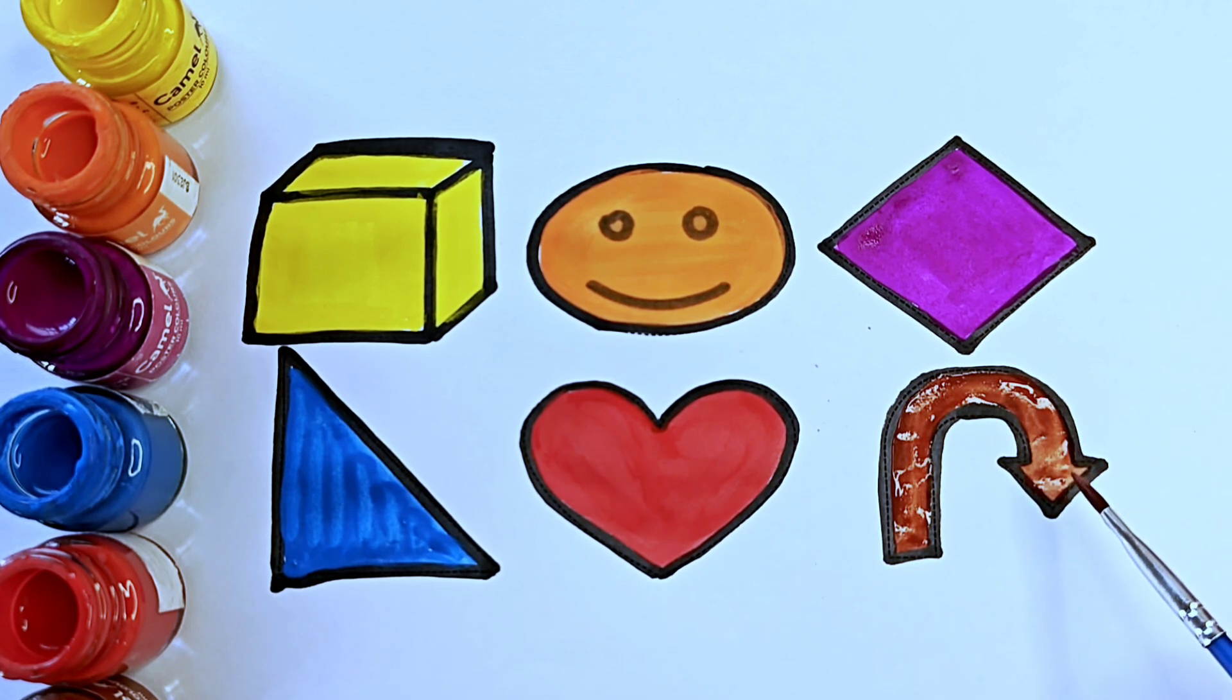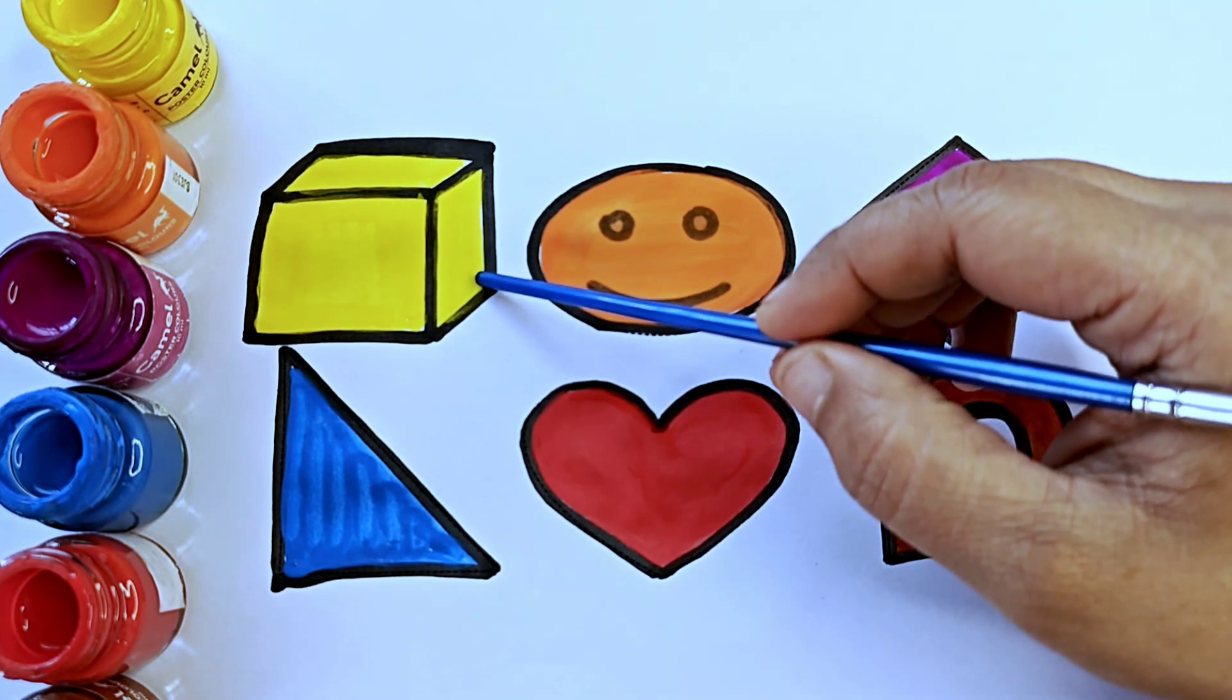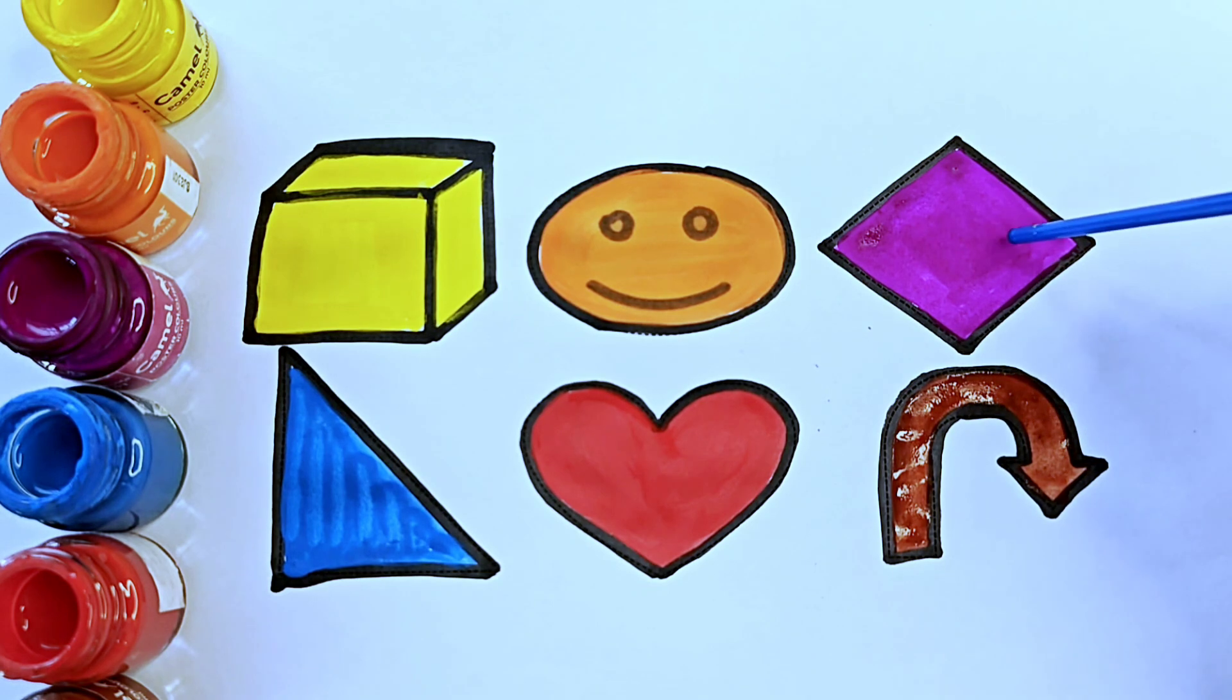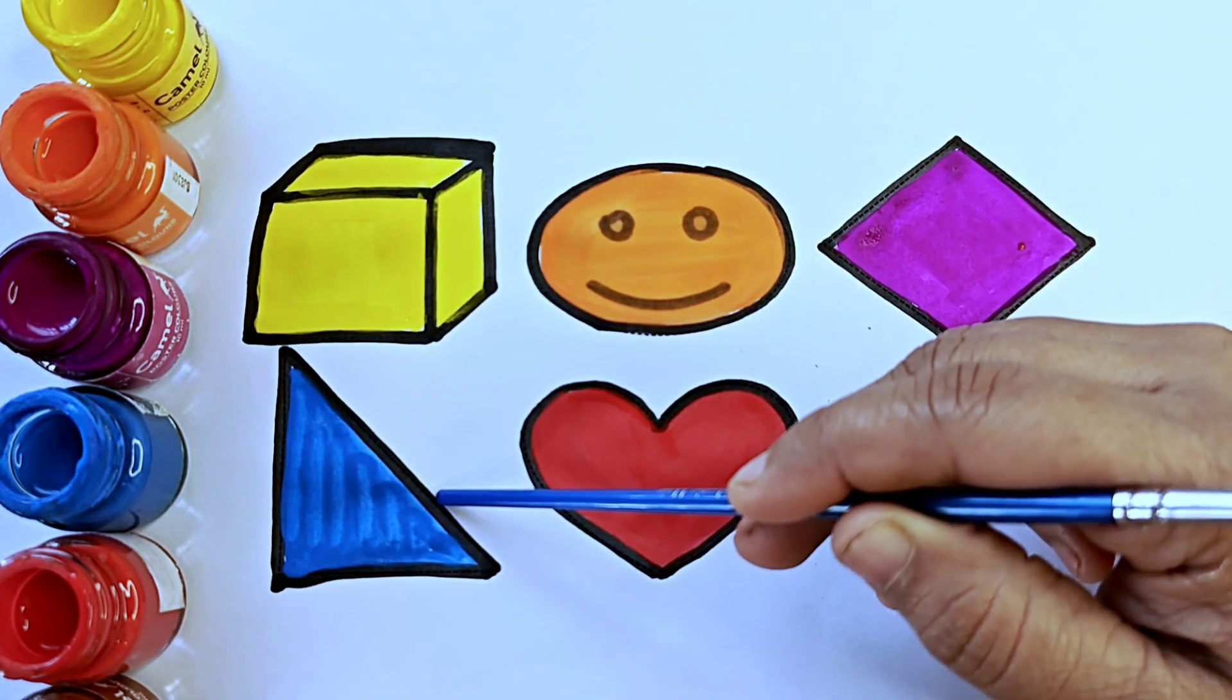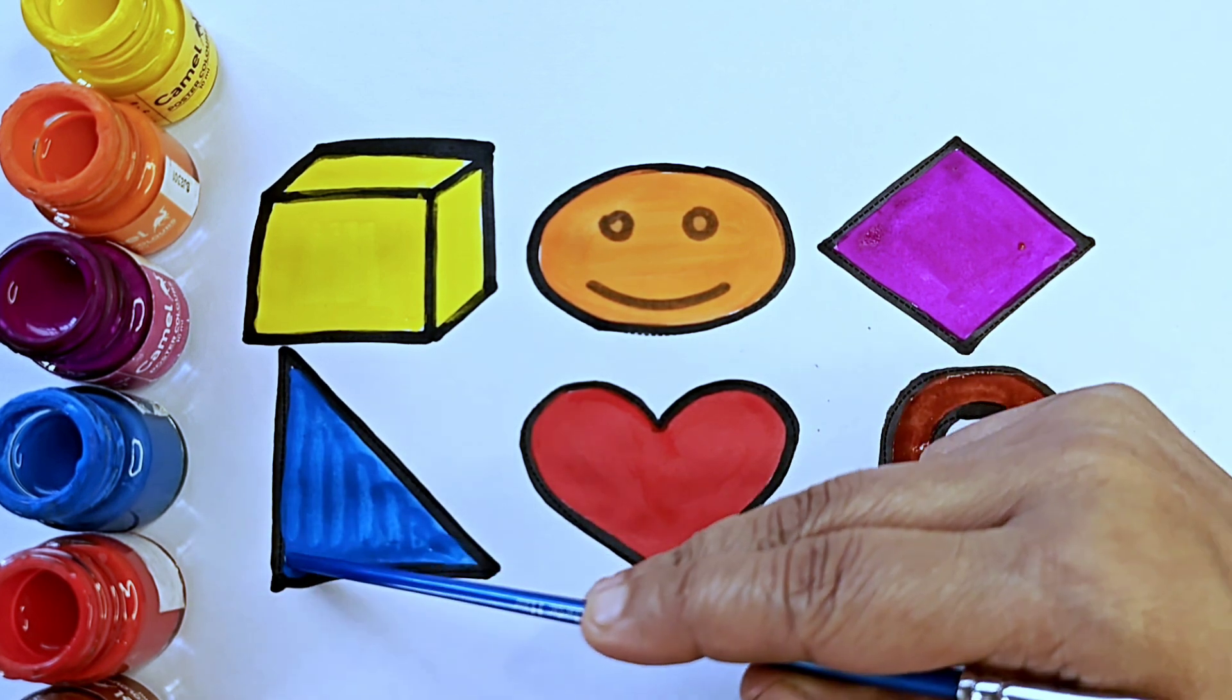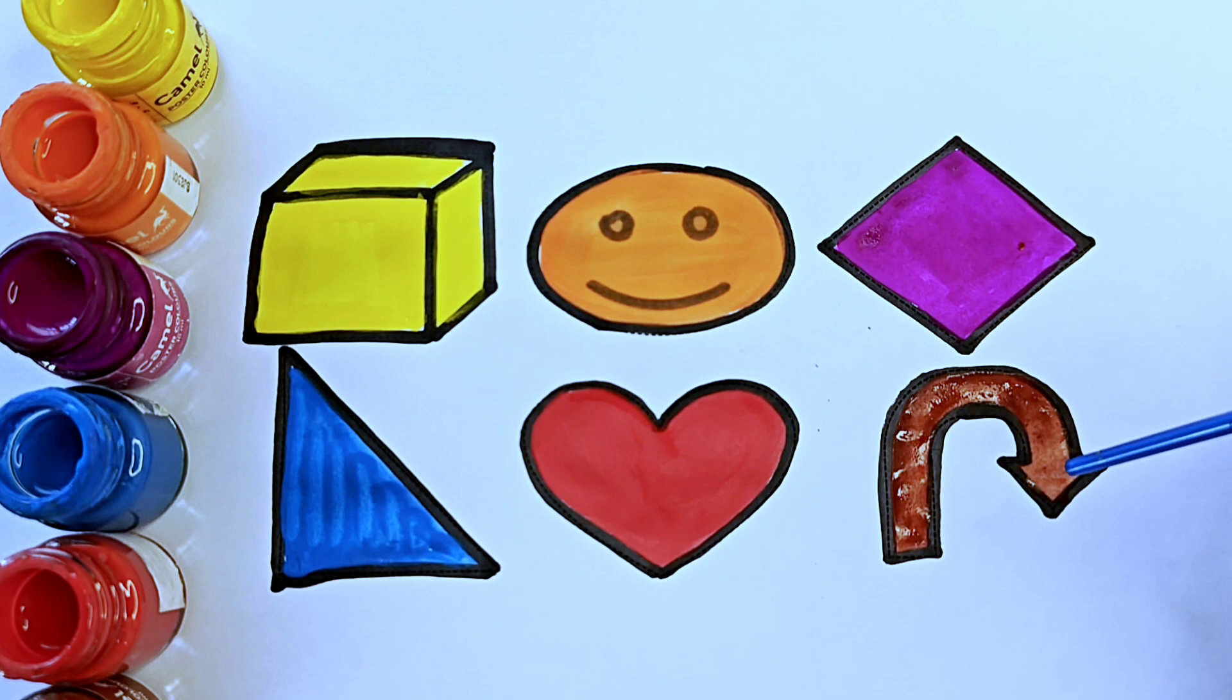U-turn, U-T-U-R-N, u-turn. Cube, this is a 3D shape. Smiley, it is an emoji. Rhombus or diamond, it is a 2D shape and has four sides. This is a right triangle, it has three sides, it is a 2D shape, one angle is 90 degrees. This is heart, it is a shape. U-turn, it is a symbol.